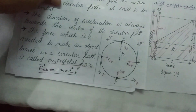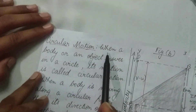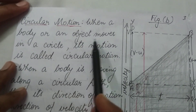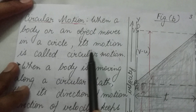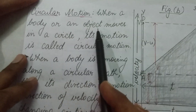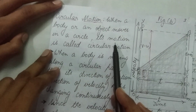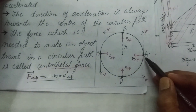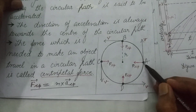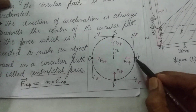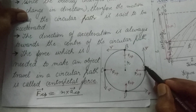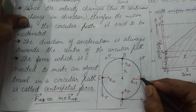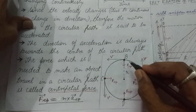Now I am going to explain circular motion. Circular motion is when a body or object moves in a circle — its motion is called circular motion. For example, a particle at A moves from A to B, B to C, and C to D, so the motion of the particle is circular motion.